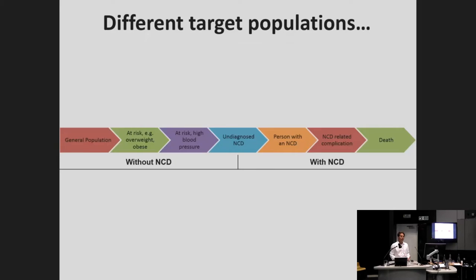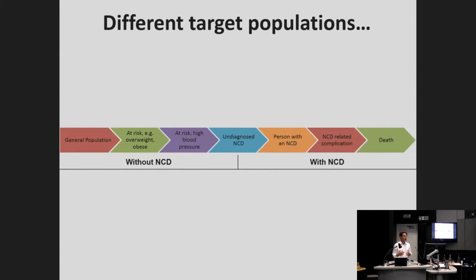Before starting on the assessments, I think we talk about NCDs and people with NCDs as if they were a whole. But we have to remember that NCDs is a continuum from the general population to, unfortunately, death — people at risk, people with overweight or obesity, high blood pressure, high blood glucose, a non-diagnosed NCD, or people with actual NCDs or NCD-related complications. They're all part of the spectrum with different needs and different requirements from the response.